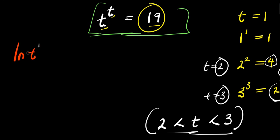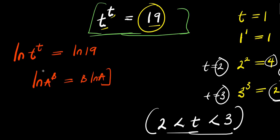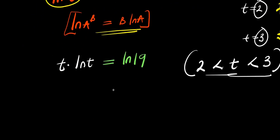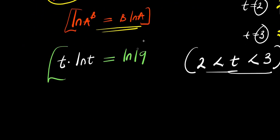We take the natural log of t to the power of t, and this equals the natural log of 19. Now if you have ln of a to the power of b, this equals b times ln a. So applying this property, the t comes down in front of the ln, and you are going to have t times ln t equals ln 19.